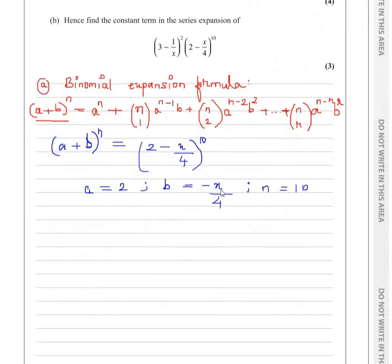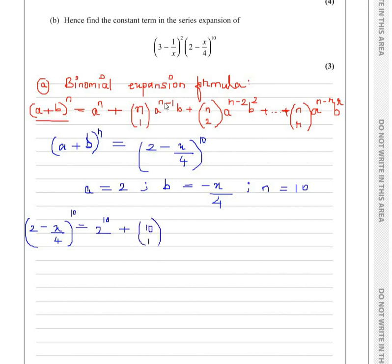So we are going to substitute these values in the formula. We write 2 minus x over 4 to the power of 10 equals a raised to n, so 2 to the power of 10, plus nC1 — so n is 10 — times a to the power of n minus 1, which is 2 to the power of 9, times b, which is minus x over 4.